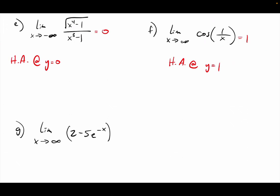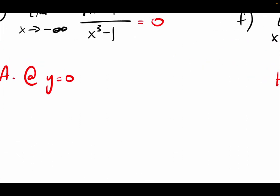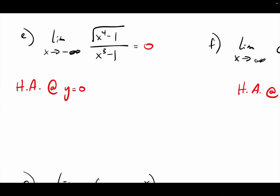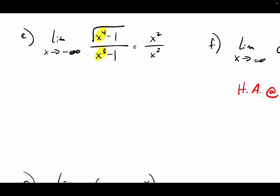Let's talk about problem E — the limit as x approaches negative infinity. On top, we're looking for the big guys with the powers. It's x to the fourth, but it's the square root of x to the fourth. What is the square root of x to the fourth? It's x squared. So it's really x squared over x to the third — and that's bottom-heavy. So bottom-heavy: we get a limit of zero and the horizontal asymptote at y equals zero.